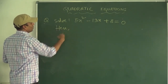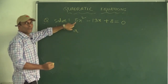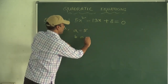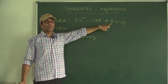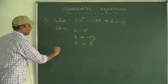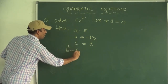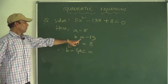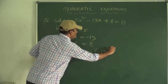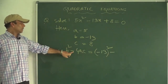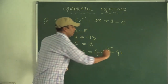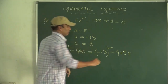Here A = 5, B = -13, and C = 8. We are going to find the discriminant, that is B² - 4AC. Therefore B² - 4AC = (-13)² - 4 × 5 × 8 = 169 - 160 = 9.